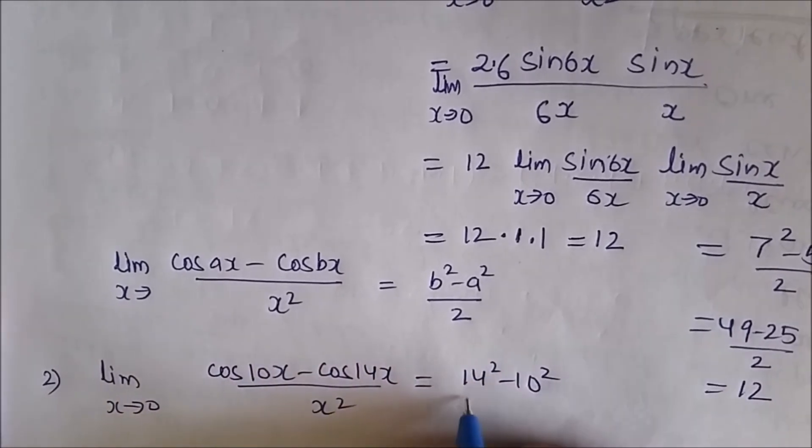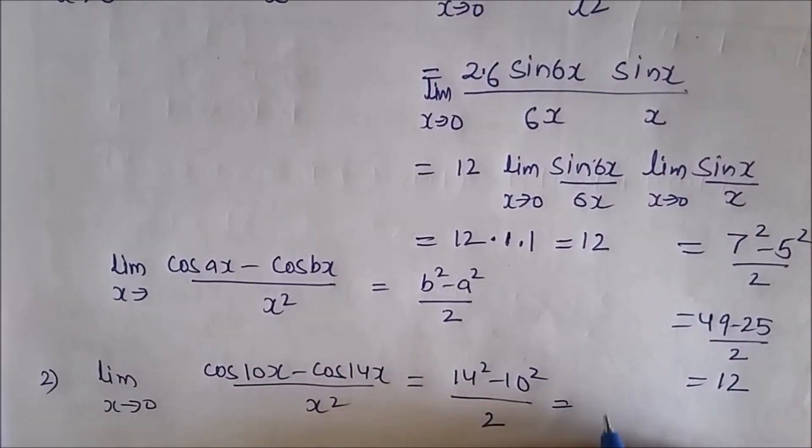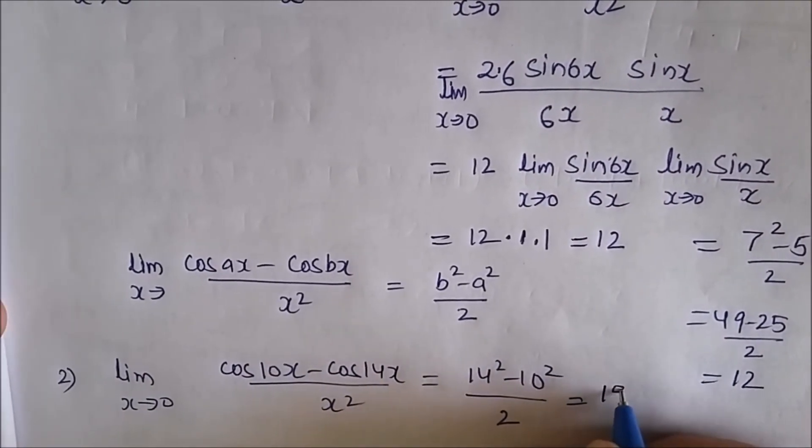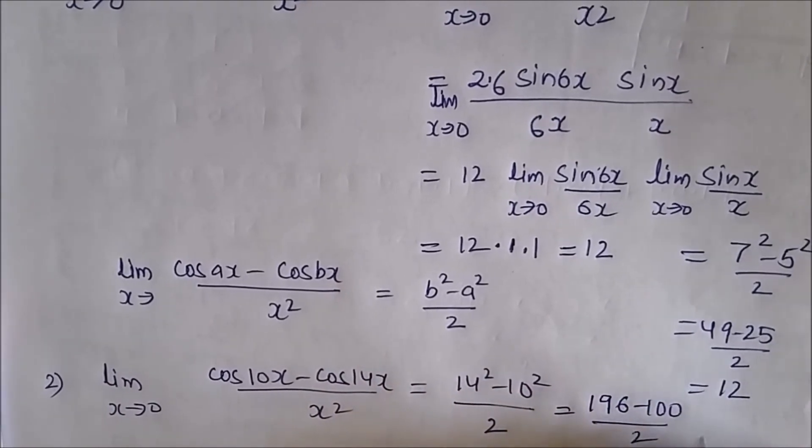14 square is 196, 10 square is 100, upon 2. Directly you can say that your answer is 96 upon 2, that is 48. See how quickly it is done.